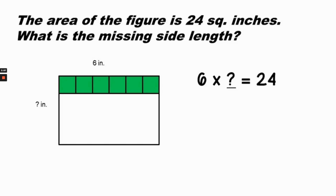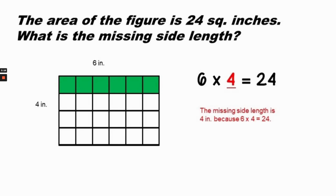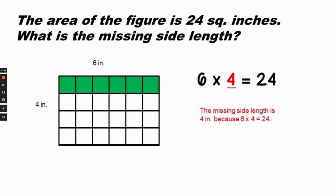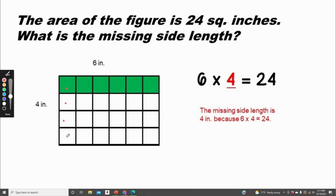The area of this figure is twenty-four square inches, so what is the missing side length? The equation is six times four equals twenty-four. The missing side length is four, because there are one, two, three, four squares on that side, and one, two, three, four, five, six squares on the other side — so four times six equals twenty-four.